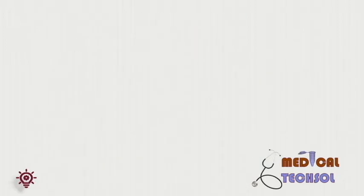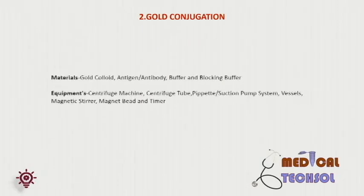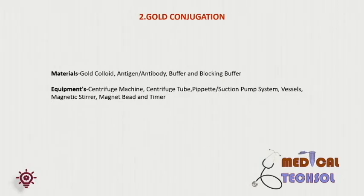Gold Conjugation — materials required are gold colloids, antigen or antibody, buffer, and blocking buffer. Equipment used are centrifuge machine, centrifuge tube, pipette or suction pump to remove the supernatant, vessel, magnetic stirrer or magnetic bead, and timer or stopwatch.